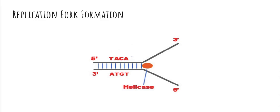An enzyme called DNA helicase, shown in orange, separates the hydrogen bonds between these base pairs and produces a Y shape, leaving two individual strands with the base pairs on each side. So the five prime to three prime strand on the top still has its base pairs; however, it's separated from its complementary base pairs on the three prime to five prime strand. The strands are in different directions — one is five prime to three prime and one is three prime to five prime. Remember that the direction of replication fork formation is different for both strands.